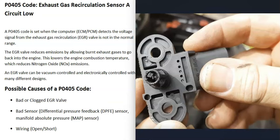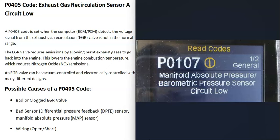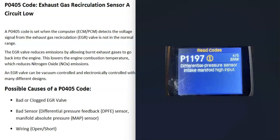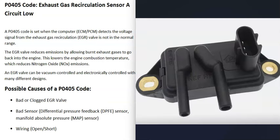If one of these sensors goes bad, like the DPFE sensor or a MAP sensor, you'll usually get another code alongside it. For example, a P0107 code — manifold absolute pressure barometric pressure sensor circuit low — would point you to check that MAP sensor. Another example is a P1197 code — differential pressure sensor intake manifold high input — which would indicate checking the DPFE sensor.